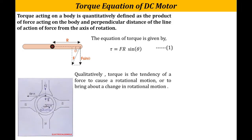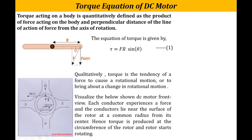Let's consider this figure. It consists of a north pole and a south pole. This is the armature, which is nothing but the rotor. Here you will observe this is a conductor. If you carefully observe, whatever distance of this conductor from the center of the shaft is R, and whatever force experienced by that conductor is along the tangent. Therefore torque is produced at the circumference of the rotor and the rotor starts rotating.